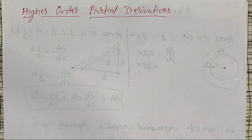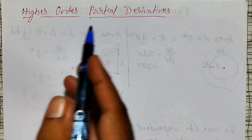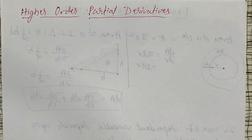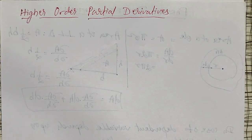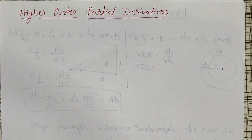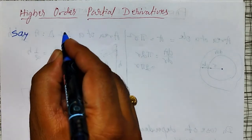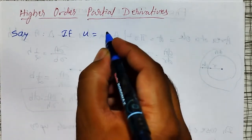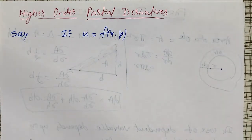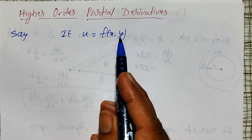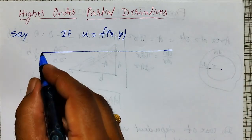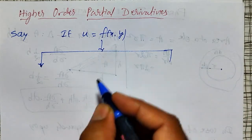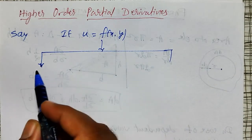In this video I am going to discuss higher-order partial derivatives. In my previous video I defined partial derivatives of the first order — how they exist and how to define them. Now here we'll discuss how to find higher-order derivatives and how to denote them. Say if u is equal to f of x and y, u is a function of x and y. I'll use a tree diagram so that you can understand: u depends upon x and y.